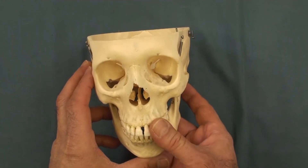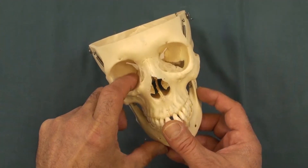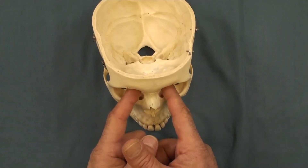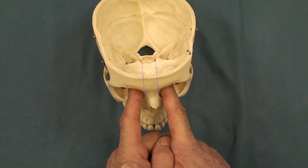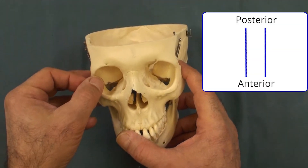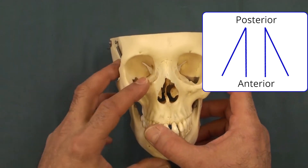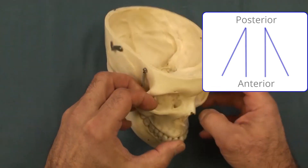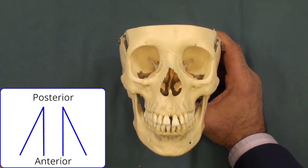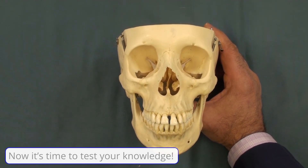Looking at both orbits together, the medial walls are roughly parallel to each other, whereas the lateral walls are angled. This orientation affects the functional anatomy of the muscles that move the eyeball.